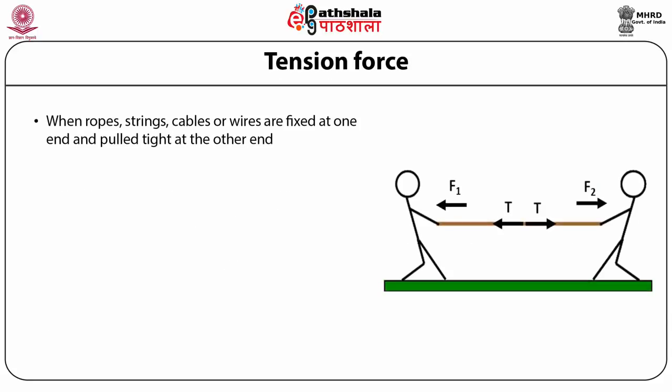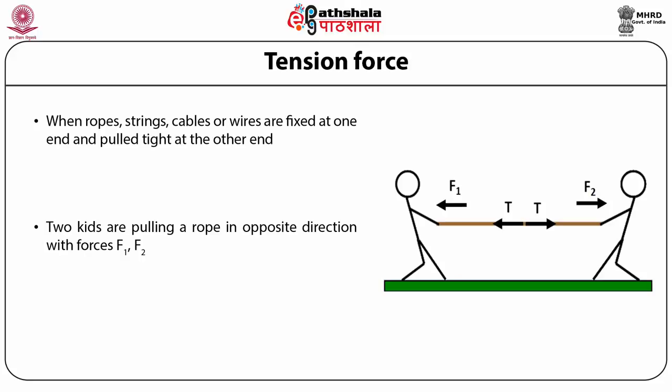Tension force occurs when ropes, strings, cables, or wires are fixed at one end and pulled at the other. For example, two kids pulling a rope in opposite directions with forces F1 and F2 — the tension T developed in the rope is always opposite to the applied force. If pulled from both ends, tension is equal and opposite; if the forces are unequal, the rope moves toward the side with the larger force.